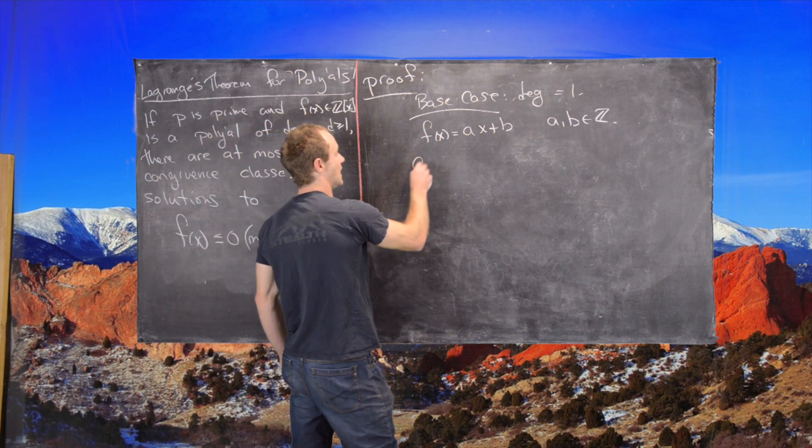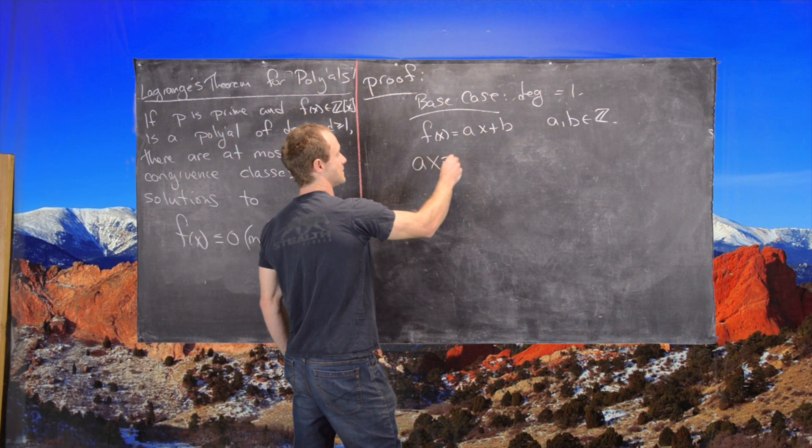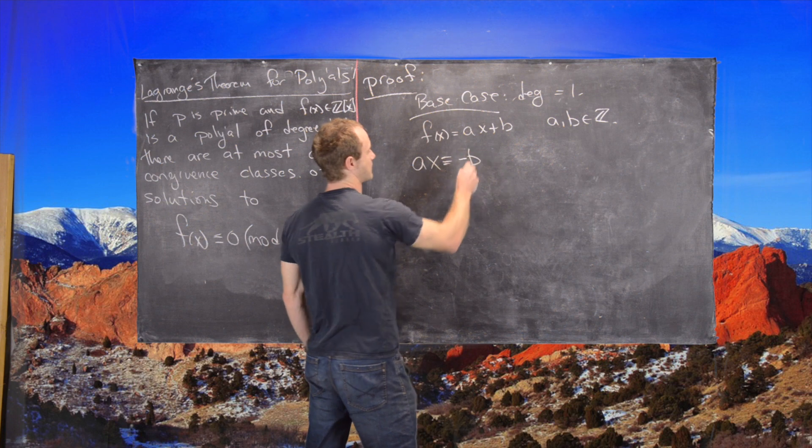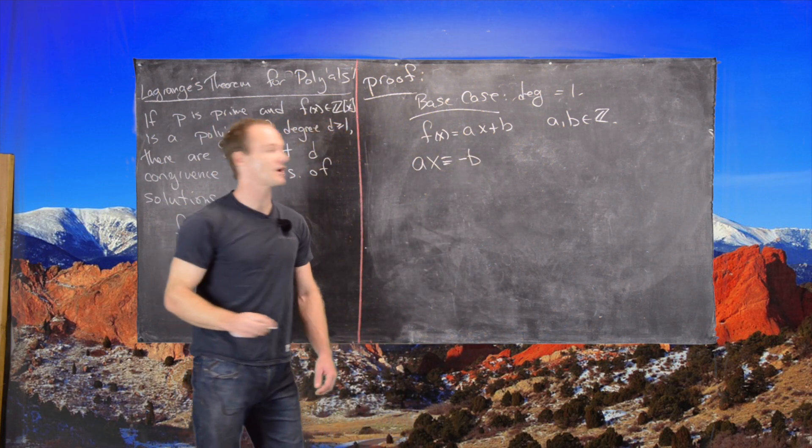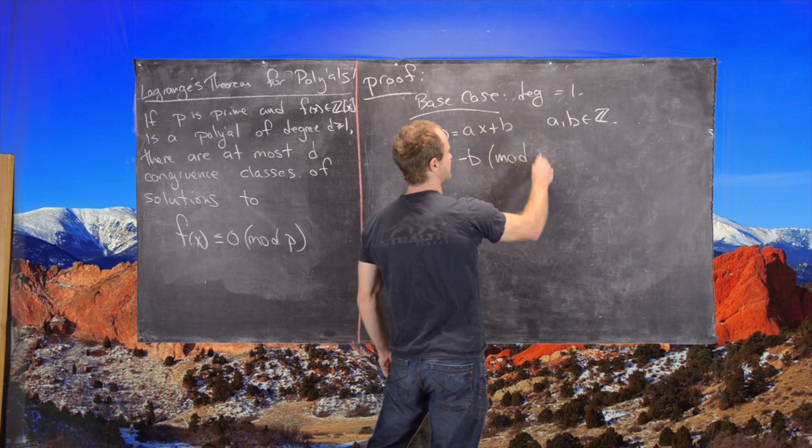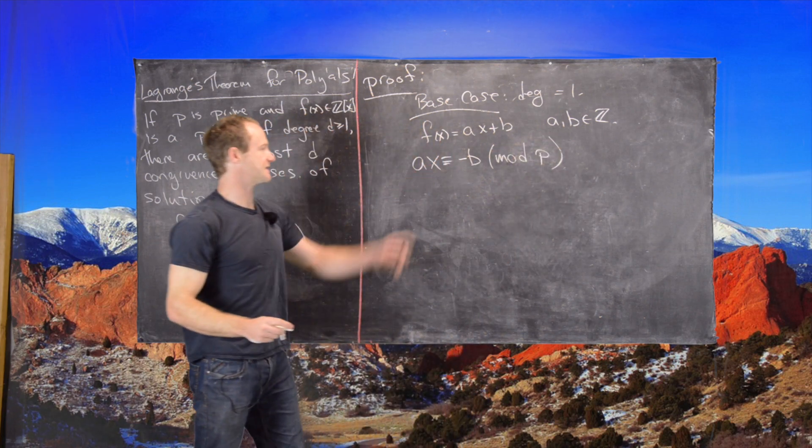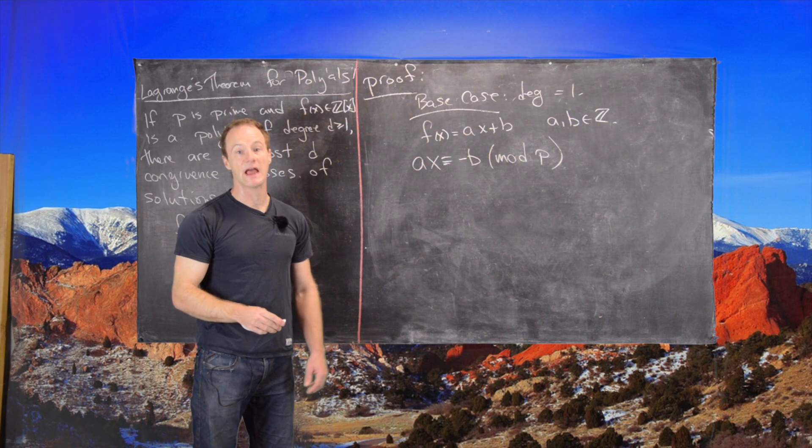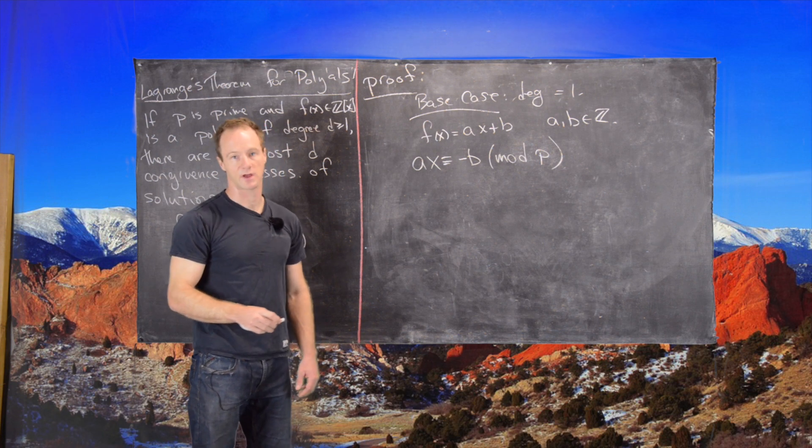That means the polynomial congruence that we need to solve is the same thing as the linear congruence AX is congruent to negative B mod P.